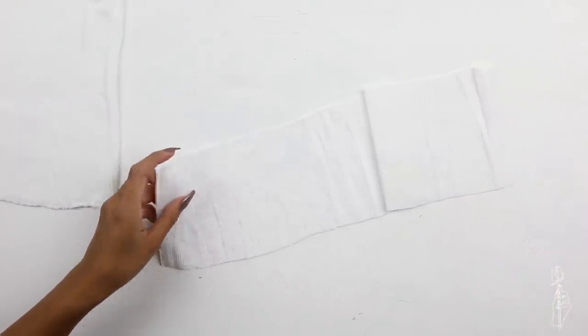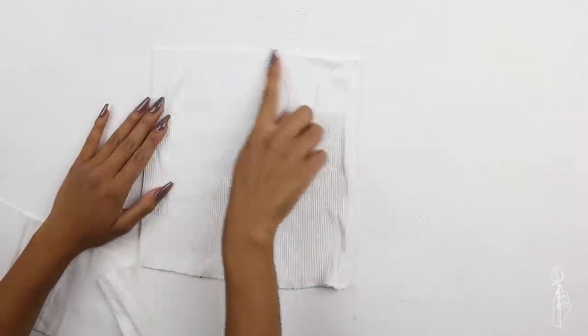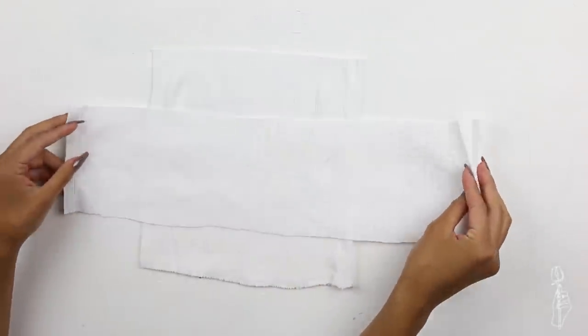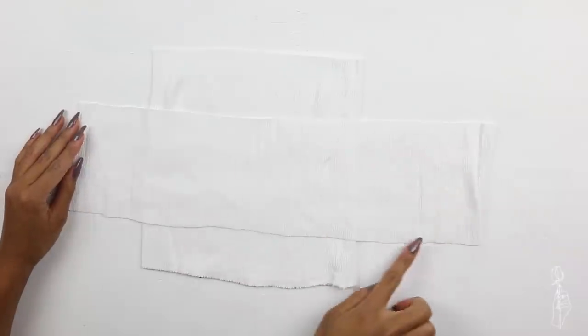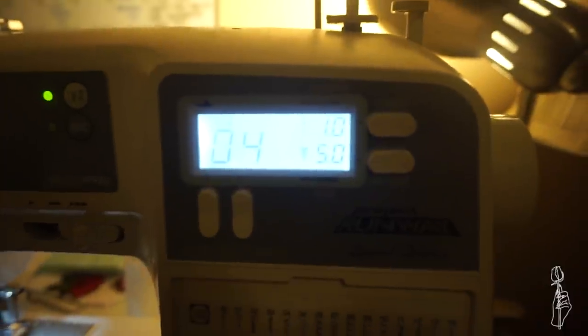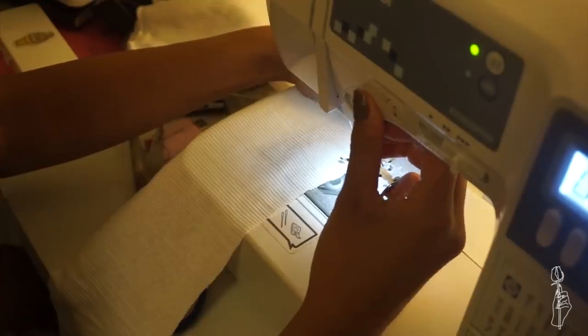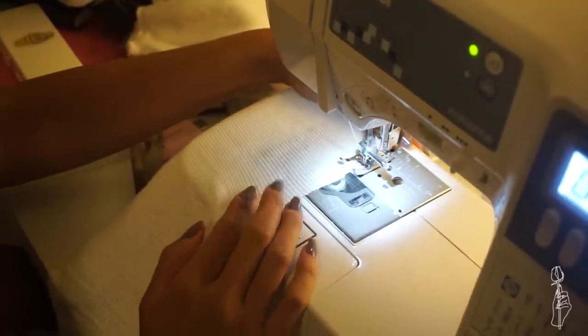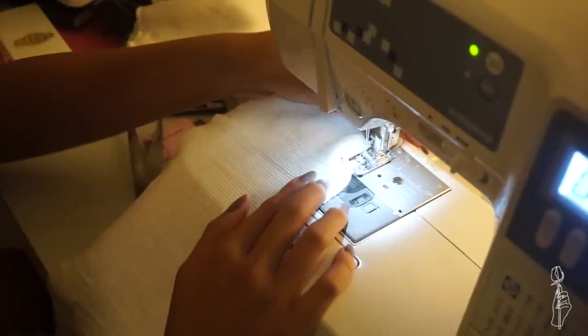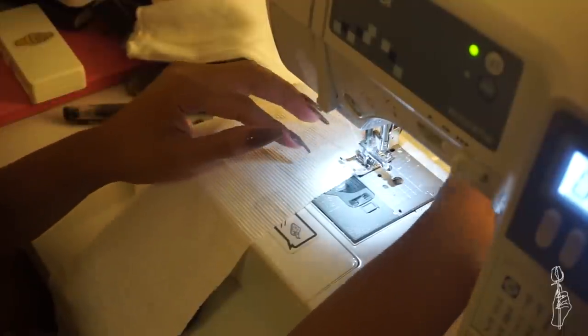So for you guys that don't know what a lettuce hem is, it's that curly hem that everyone's been seeing recently. Basically what it is, it's just a zigzag stitch. Usually people do this hem with a serger, but unfortunately because I don't have one, I'm just going to use this method. So these are the settings I'm using. My length is 1.0 and my width is 5.0. So the way to make a lettuce hem, all you do is stretch your fabric while sewing your zigzag stitch to the edge. The stretching and the tiny zigzag stitch is what makes that curvy hem.